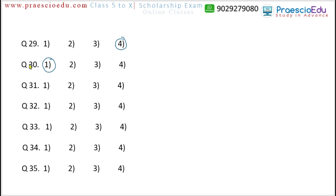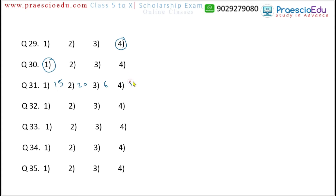Question 31: XV means 15 in roman numerals, XX means 20, VI means 6, and V means 5. Options 15, 20, and 5 are all divisible by 5. But option 3, which gives 6, is not divisible by 5. So option 3 is the different one for question 31.